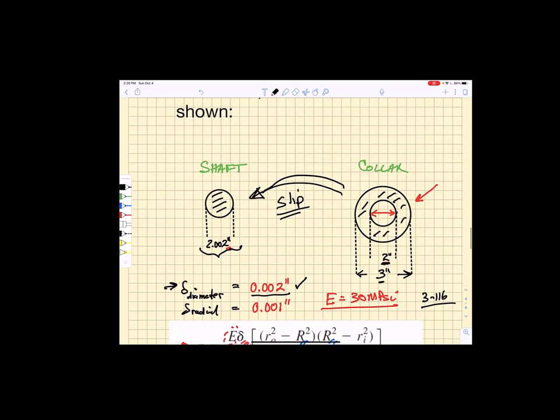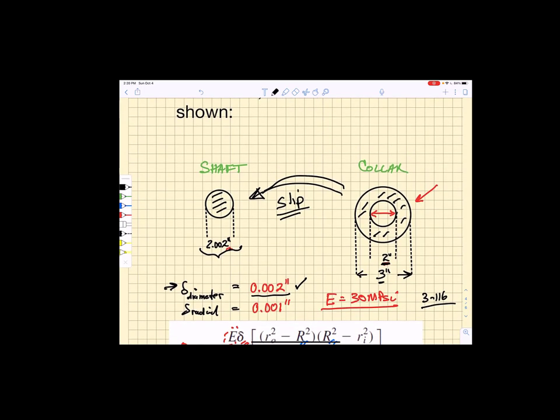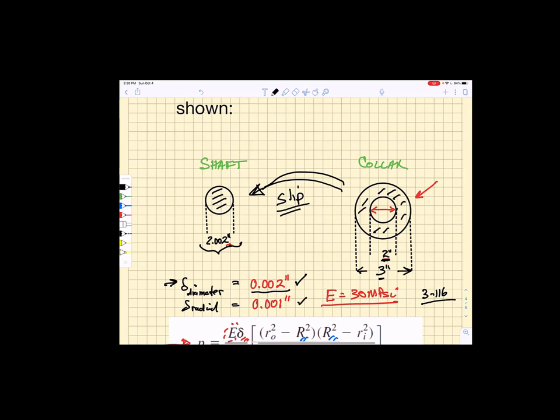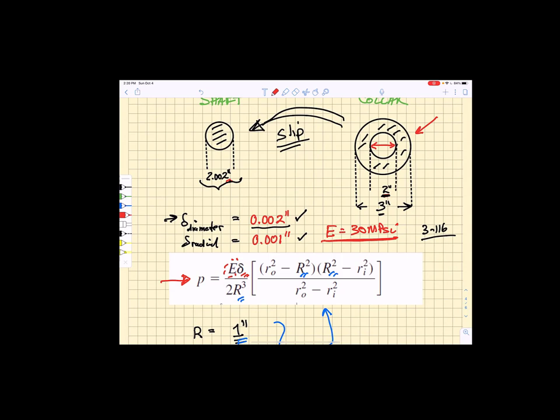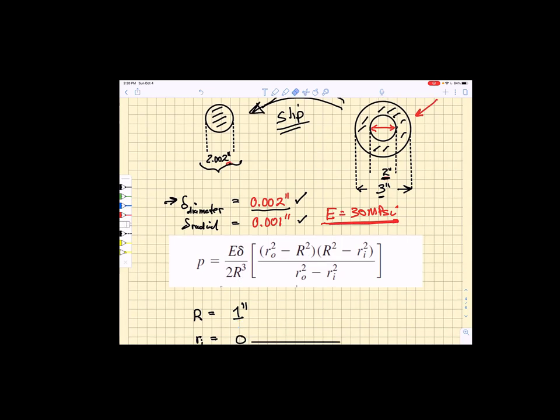If I looked at it as a radial interference it would simply be half the diametral so we would be at 0.001 inches. Now I'm going to need to know the elastic modulus which is given here. If I want to calculate that pressure I'm going to have to use an equation from the book.